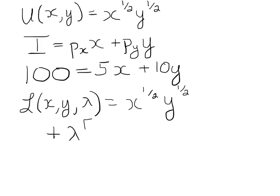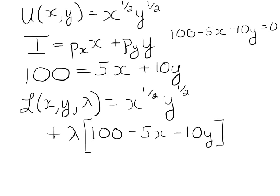We have lambda, the Lagrange multiplier, times the budget constraint, where it's set equal to 0. So how would we solve the budget constraint to set it equal to 0? We can just subtract 5x and 10y from the left-hand side, and that will give us 0 on the right-hand side. Then you just substitute that left-hand side into the Lagrange problem, and there you have your problem.